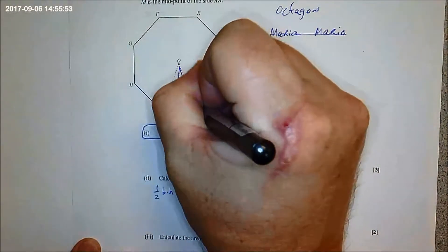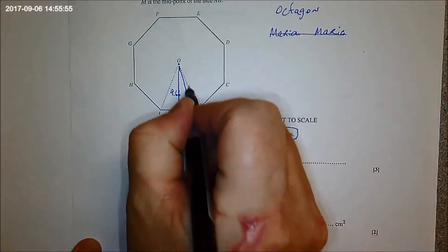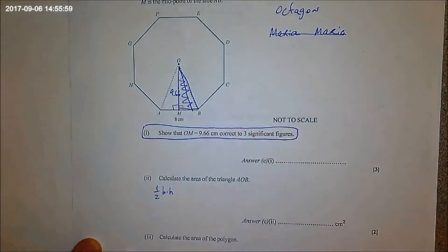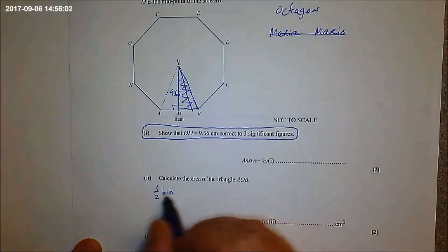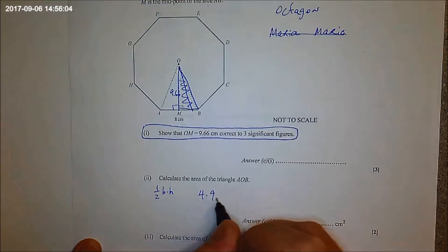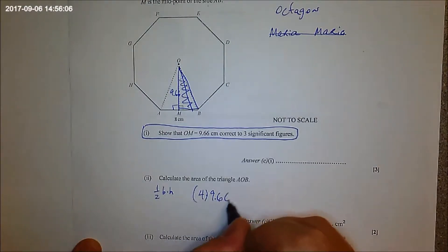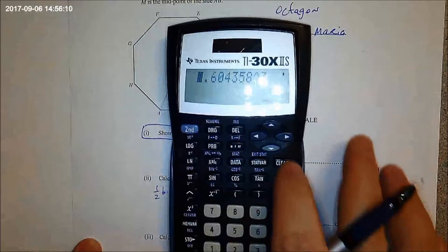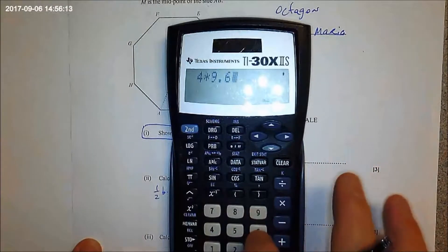Because look, this isosceles, this triangle over here, oh I missed, epic fail. This triangle over here is the same as this one over here right? So anyway, so that is four times 9.66 right? I'll use this fancy ciphering machine.